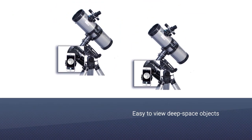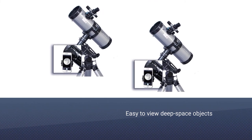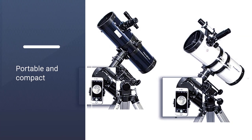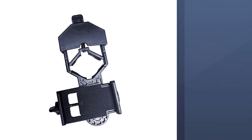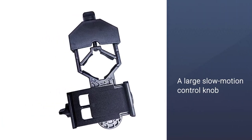It is portable and compact, making it suitable to carry to campsites for observing heavenly bodies in the dark sky. The sturdy mount and large slow motion control knob help you track objects smoothly as they move across the sky without interference.